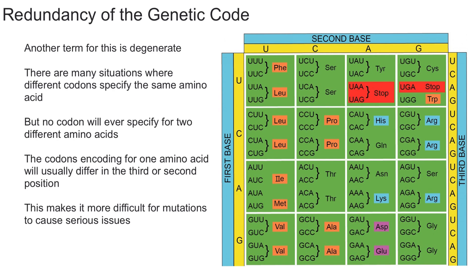Sometimes it could differ in the second position as well. This isn't always true — for example, for leucine there are six codons that code for leucine. Two of them begin with U as the first base and the other four begin with C. So it's just a general rule that codons encoding for one amino acid will usually differ in the third or second position.